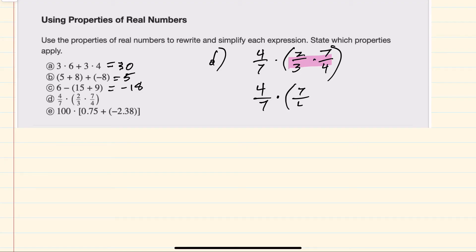moving the 7 fourths to be first times the 2 thirds, and then I can use the associative property to multiply the 4 sevenths and the 7 fourths first. The advantage here being that the 7s and 4s cancel to just being 1 times 2 thirds, which is 2 thirds.